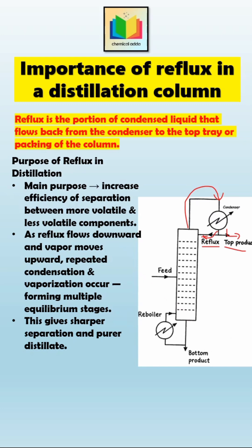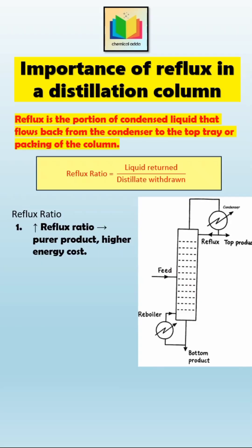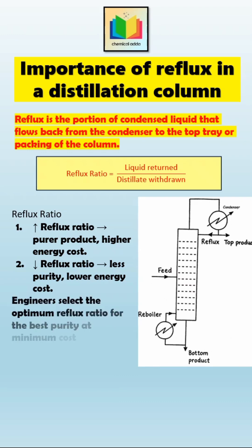Now let's talk about the reflux ratio, because it's directly related to performance. The reflux ratio is the ratio of the amount of liquid returned as reflux to the amount of distillate withdrawn. If you increase the reflux ratio, more liquid is sent back to the column, meaning more contact between liquid and vapor, so we get a purer distillate. But it also increases energy consumption in the condenser and reboiler. On the other hand, if you decrease the reflux ratio, the column needs less energy, but the product purity decreases. Engineers always choose an optimum reflux ratio to get the desired purity at the lowest possible cost.